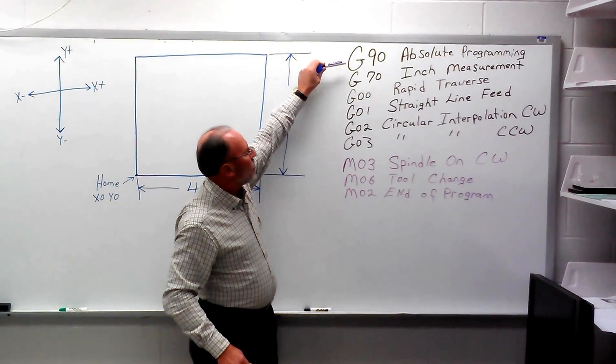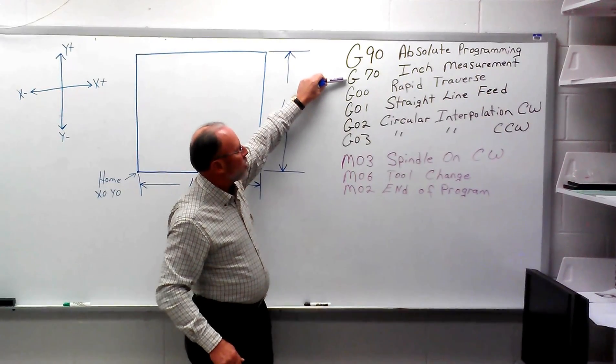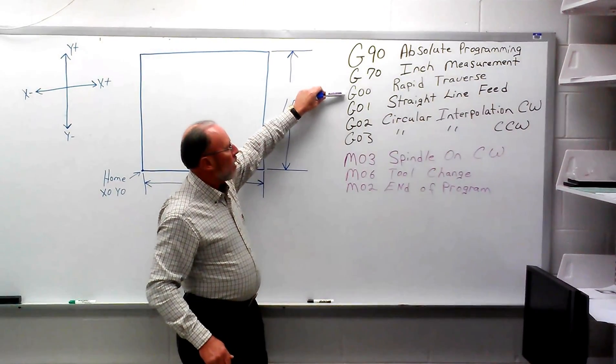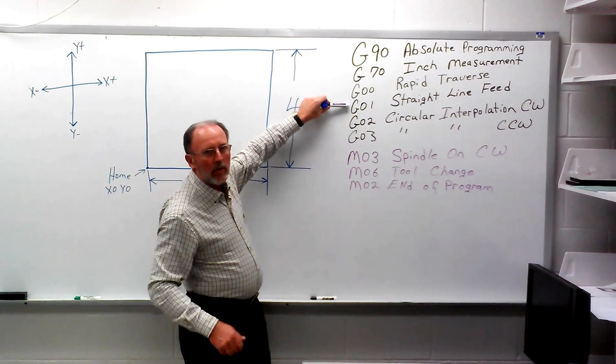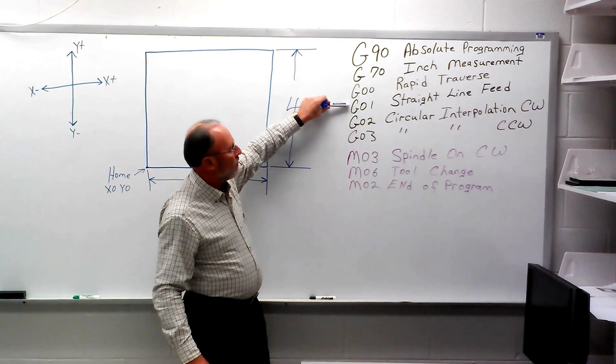G90, absolute programming. G70 for inch measurements. We have a rapid traversal with a G00, a G01 or either a G1, or a straight line feed.